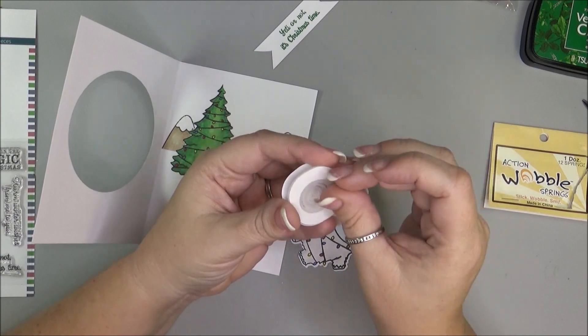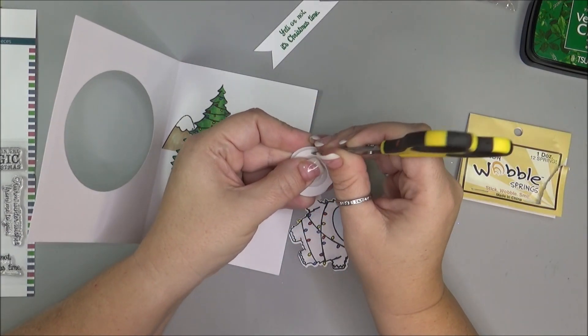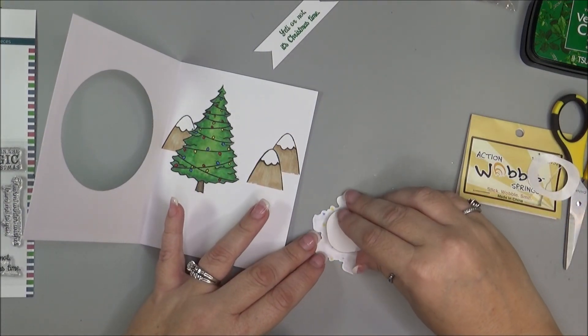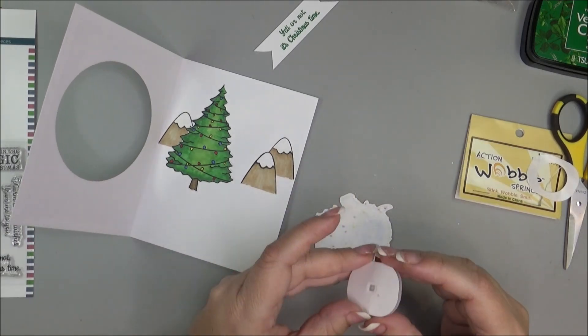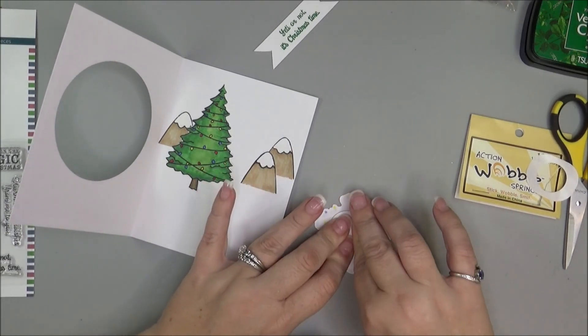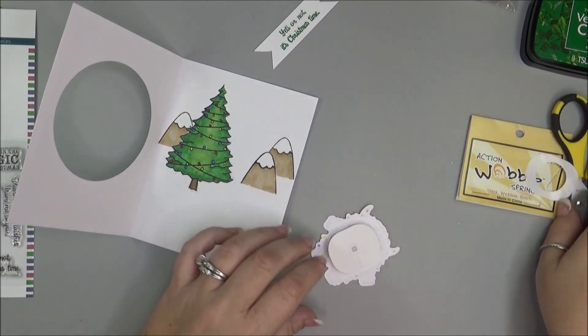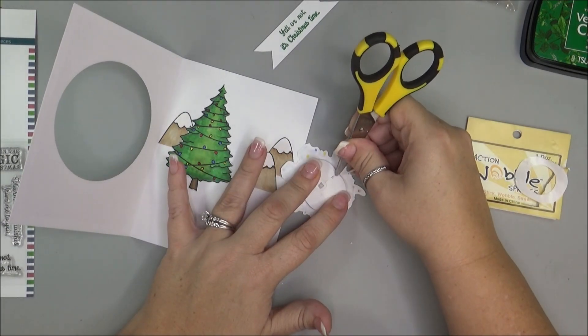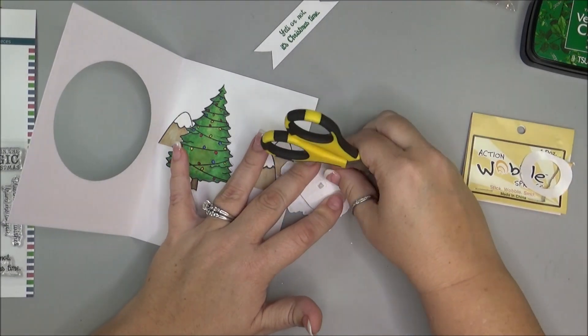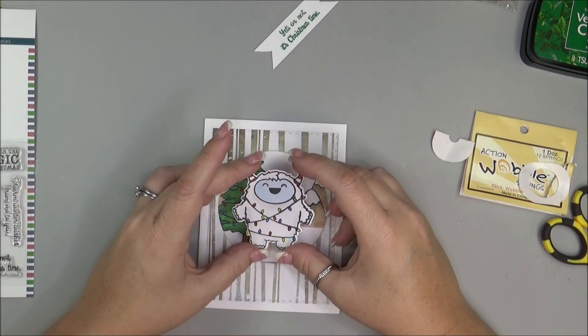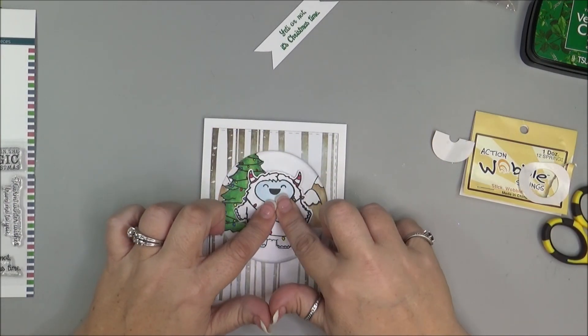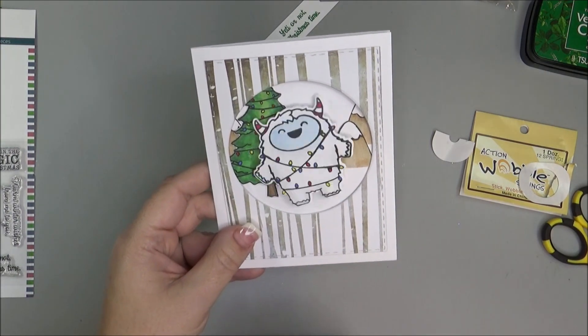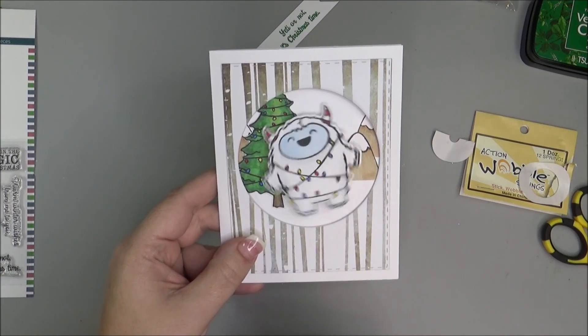I'm going to peel that off. Stick it into the center of my Yeti like that. And then peel the back off of it again. Lay him right into the center. Press it down. And there he goes. The happy little wobbly Yeti.